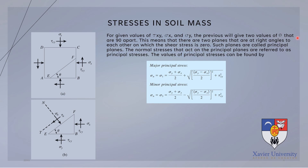This means there are two planes at right angles to each other on which the shear stress is zero. Such planes are called the principal planes, and the normal stresses that act on the principal planes are referred to as principal stresses. The values of principal stresses — sigma-1 (major) and sigma-3 (minor) — can be found using the given formulas. You don't need to memorize these formulas, as another method will be introduced later.